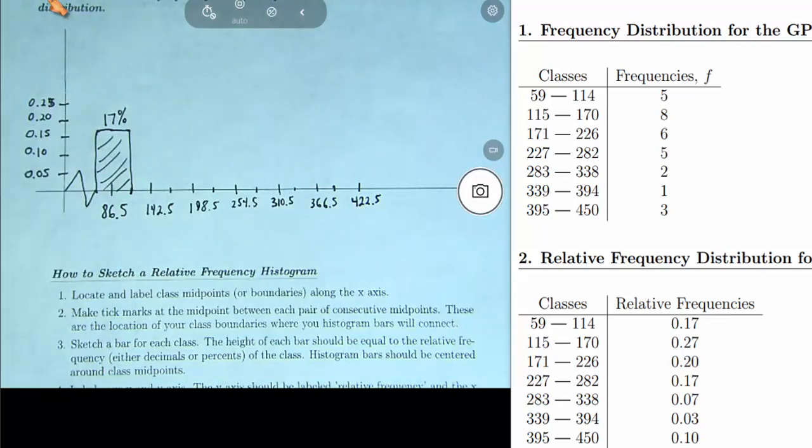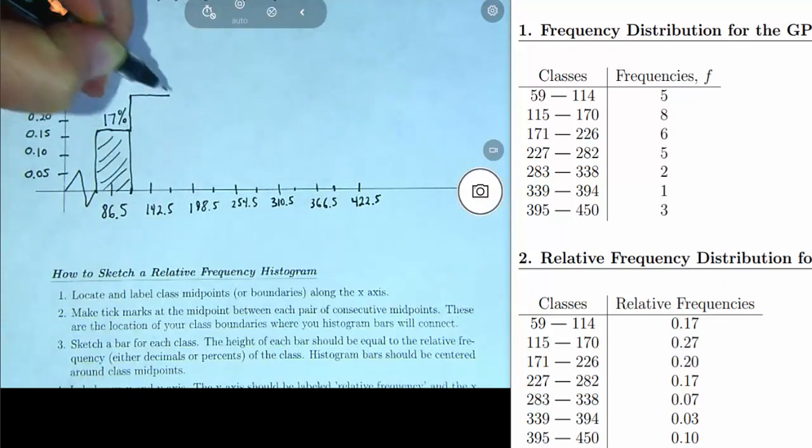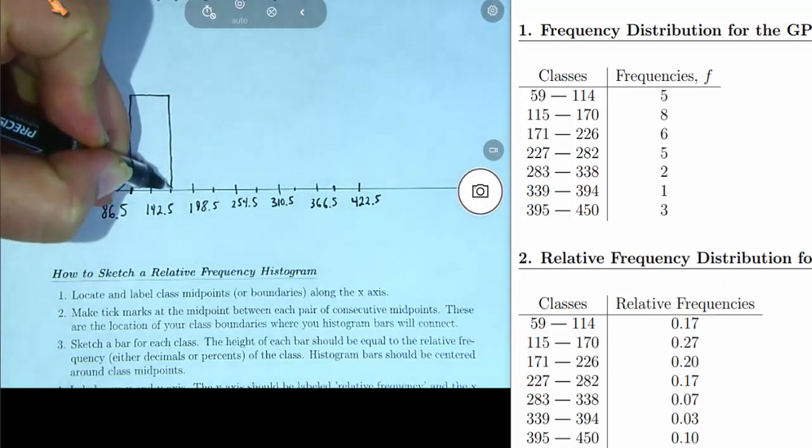The relative frequency of the next class, the second class, 27%. So I'm going to center another bar around the next midpoint, and the height of that bar needs to be .27 or 27%.